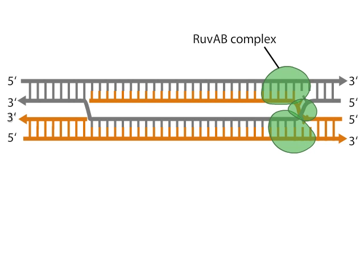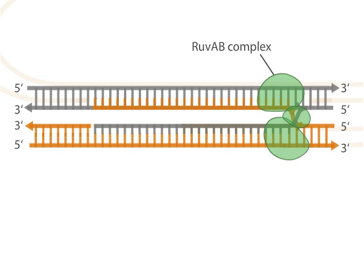This process extends the base pairing between homologous donor and recipient strands. Ultimately, the end of the displaced strand at the D-loop is cleaved and the donor strand is ligated to the recipient strand.